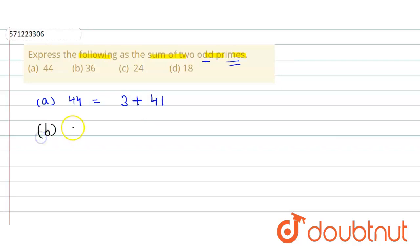Similarly, in the second part, here it is 36. If we take the first number to be 3, then another number will be 33, which is not a prime number. So we take the next odd prime number, which is 5. If we take 5, then the another odd prime number will be 31. So these both numbers are odd prime numbers, and their sum is equal to 36.